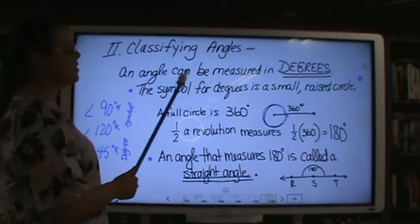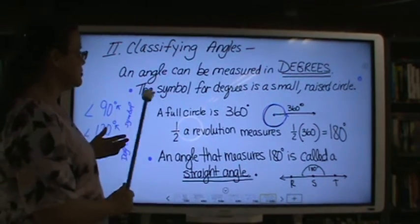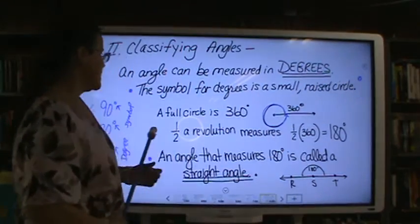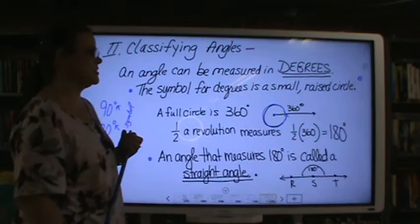Classifying Angles. An angle can be measured in degrees. The symbol for degrees is a small raised circle above the number. A full circle is 360 degrees.